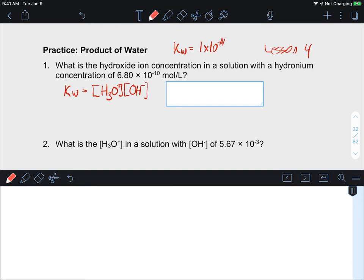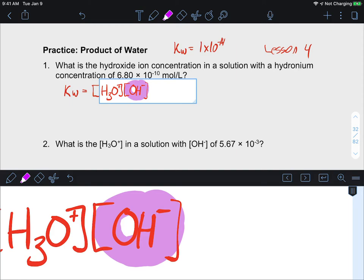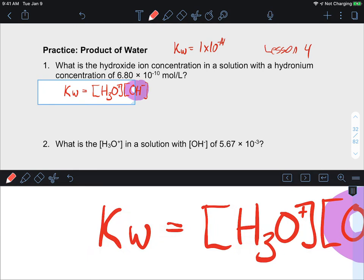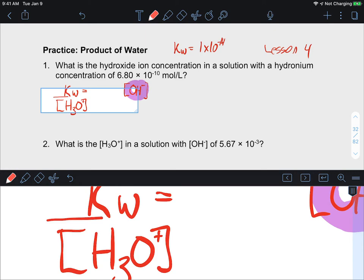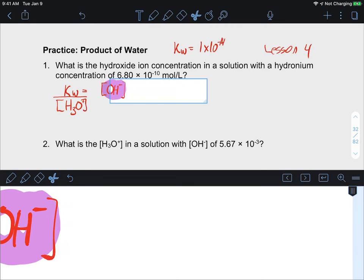For this example, they said what's the hydroxide concentration, so we're looking for this one here when you're given a solution of hydronium that is 6.8 times 10 to the negative 10. So that's sort of like saying that we are at a pH of about 10, so it should be a basic solution.